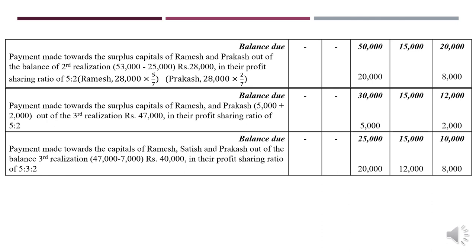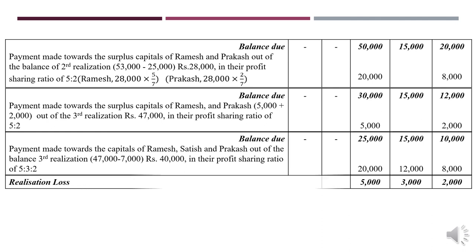After paying the 7,000 surplus, capital balances are: Ramesh 25,000; Satish 15,000; Prakash 10,000 — in ratio 5:3:2, confirming alignment with profit sharing ratio. Remaining balance from third realization: 47,000 − 7,000 = 40,000, distributed among all three partners in ratio 5:3:2, giving 20,000; 12,000; and 8,000 respectively. The final residual becomes the realization loss.